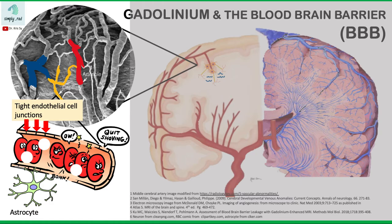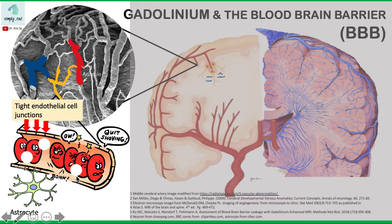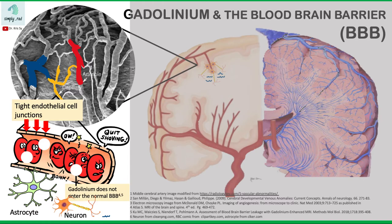Will the oxygen carried by the red blood cells be allowed entry into the brain, into the interstitium, then the neuron? Yes, of course, because the neuron will need that. Oxygen and lipid-soluble substances are allowed passage. What about water? Yes, also allowed entry. But what about gadolinium? Gadolinium here is drawn in white circles. If the blood-brain barrier is intact, the gadolinium will not be able to enter the interstitium or get close to the neuron. Gadolinium does not enter through a normal blood-brain barrier.